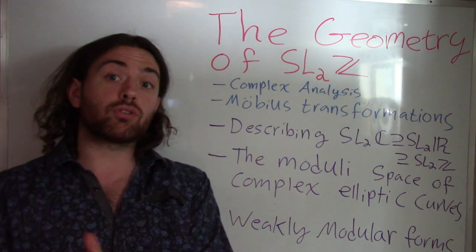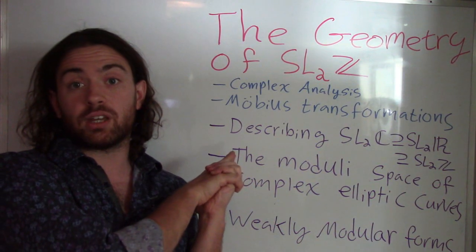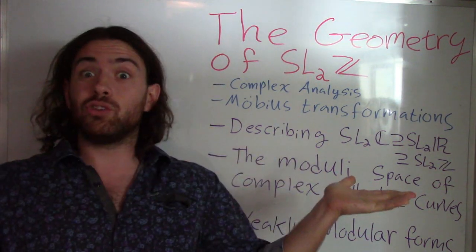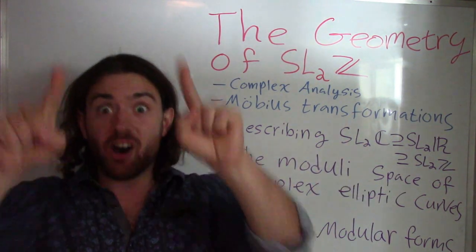So without further ado, we want to start describing SL2C and SL2R, and that means we're going to have to go to the platonic realm. So the first order of business is simply to review the definition of Mobius transformations. Now this is in itself a very interesting and rich subject, which would be covered say in a first or second year in complex analysis. We're not going to go too much in depth, just cover the basics of what we need moving forward.